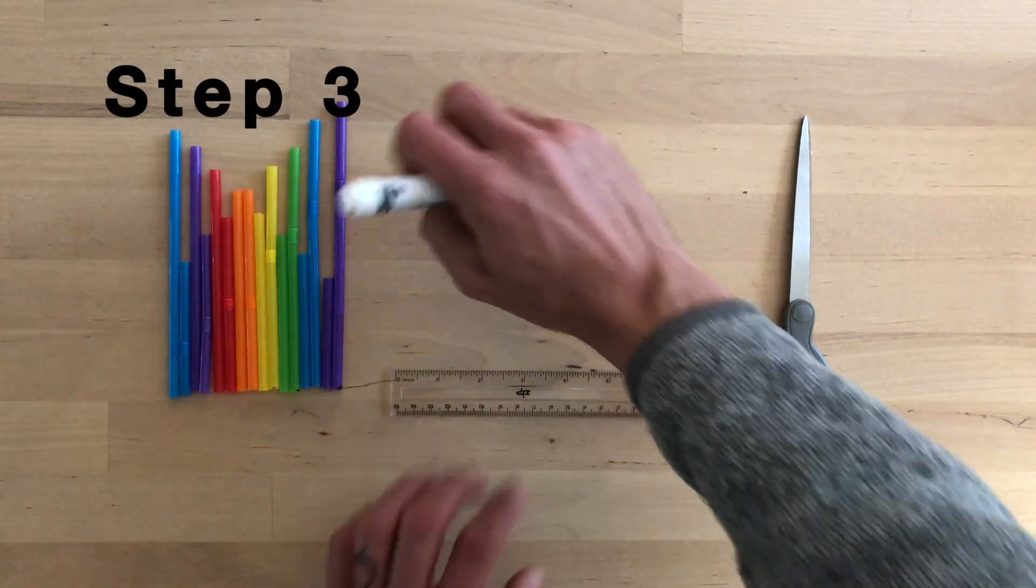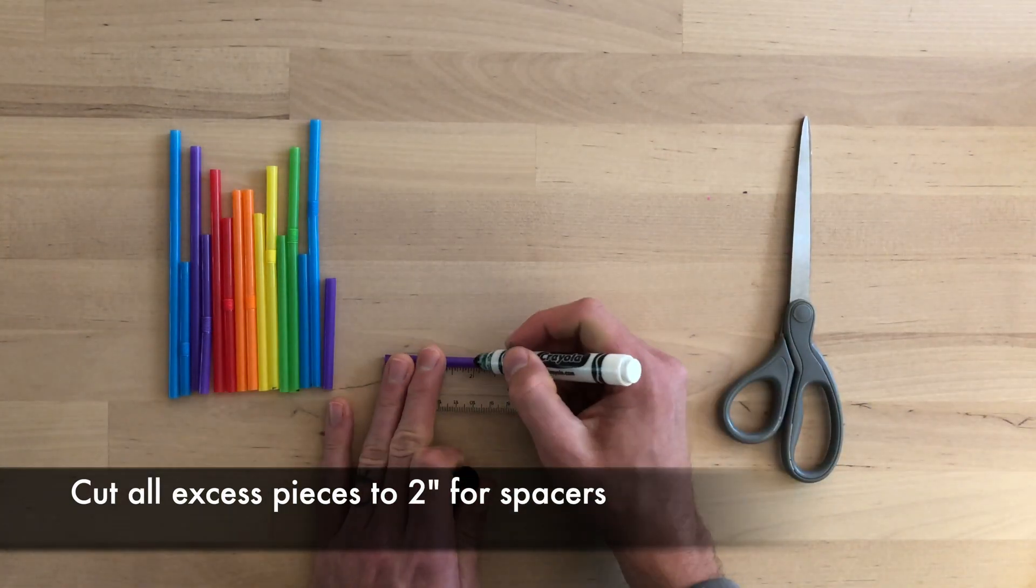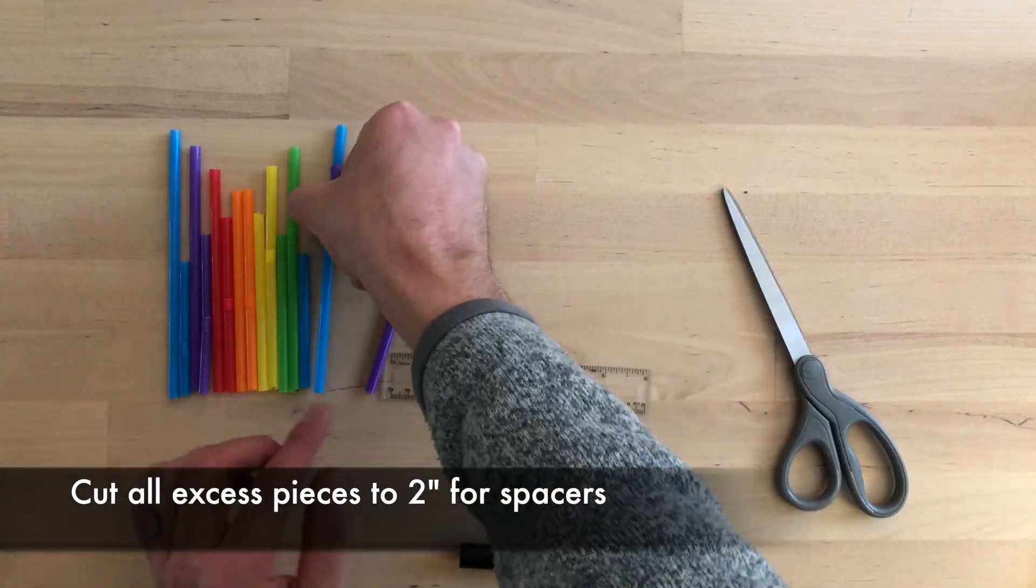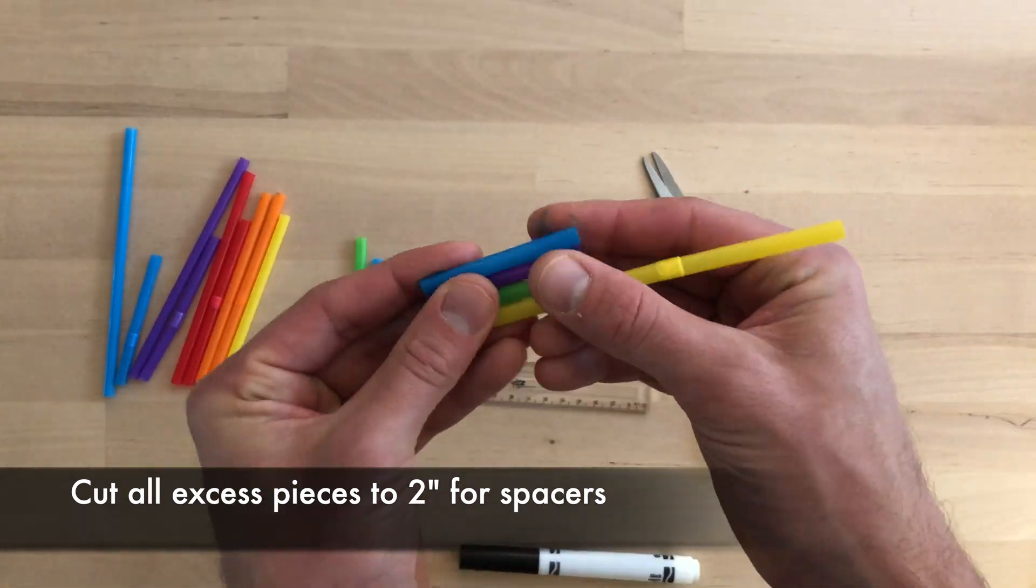Step three. Now we need to cut our spacers. So you're going to cut all your excess pieces to two inches. These will be placed in between your notes so that you can comfortably play between each note.